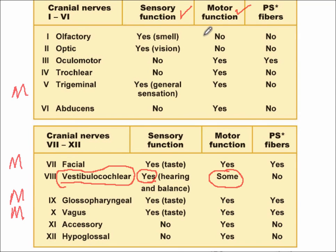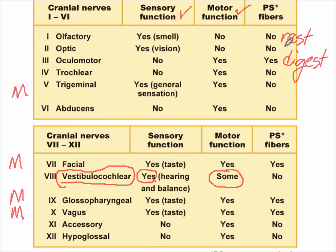By knowing whether a nerve is sensory or motor, you can figure out the function of those different cranial nerves. The last column shows which ones are parasympathetic. We'll talk about parasympathetic in Chapter 14 — it basically means rest or digest. We're going to go through some charts in your textbook showing more detail about each cranial nerve, and we'll start there in the next presentation. Thank you.